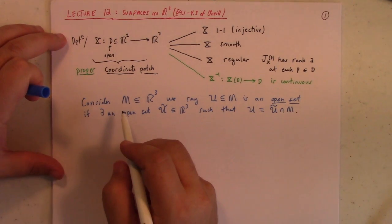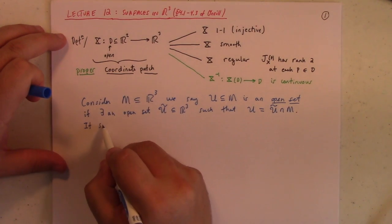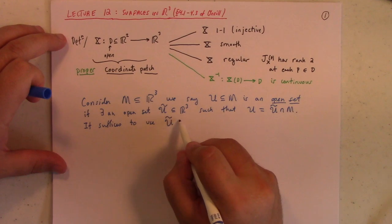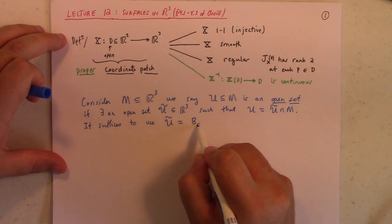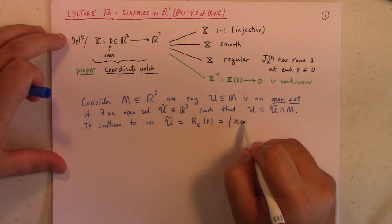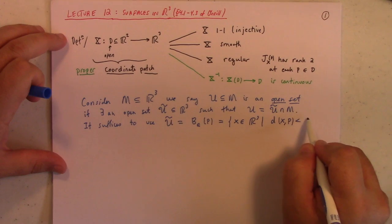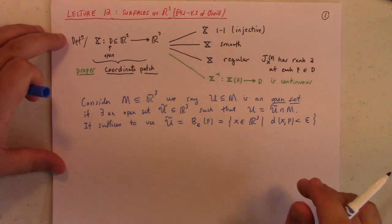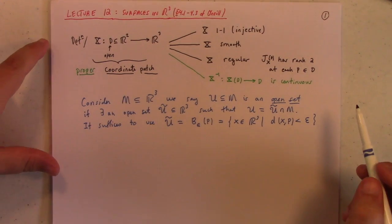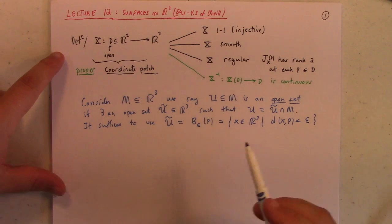Now, it turns out that it suffices to use U tilde equal to balls of radius epsilon. So, the ball of radius epsilon centered at P would be something like X in R3 such that the distance from X to P is less than epsilon, the so-called epsilon ball. So, that gives us our notion of our basic open set in the surface are going to be intersections of, well, let me just draw a picture.